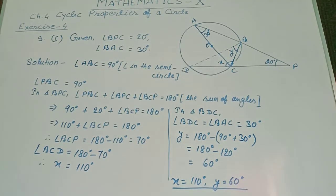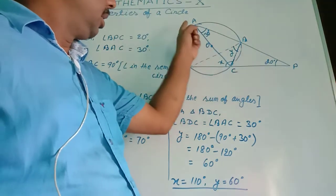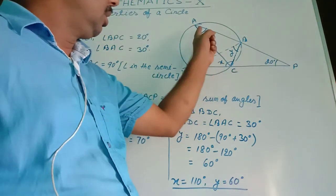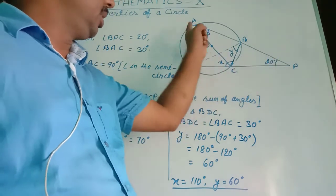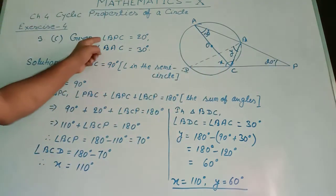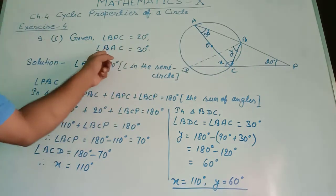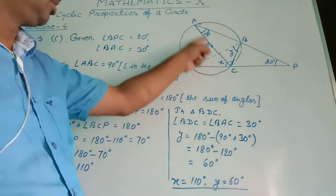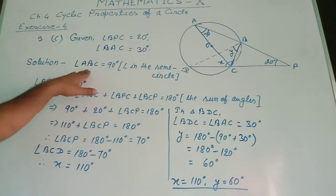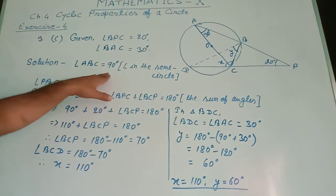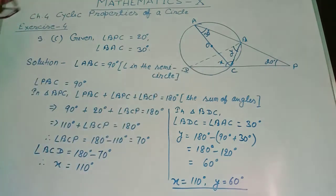In question number 3C, a figure is given. In triangle ACP, angle ABC is 20 degrees and angle PAC is 30 degrees. BPC equals 20 degrees and BAC equals 30 degrees. Since the angle in a semicircle is a right angle, angle ABC equals 90 degrees.